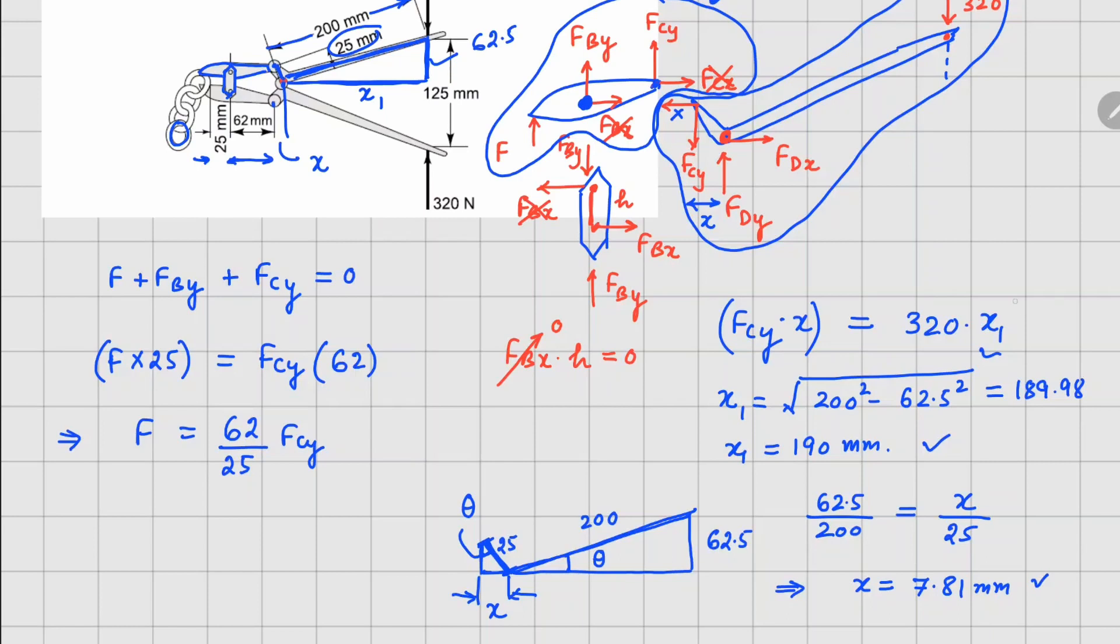Now x1 is known, x is known, I can go back to this equation right here and I can substitute both of these. So this gives us a value of FCy equals to 7781.7 newtons, and if I substitute back into the equation, the F value is calculated to be 19.3 kilonewtons.